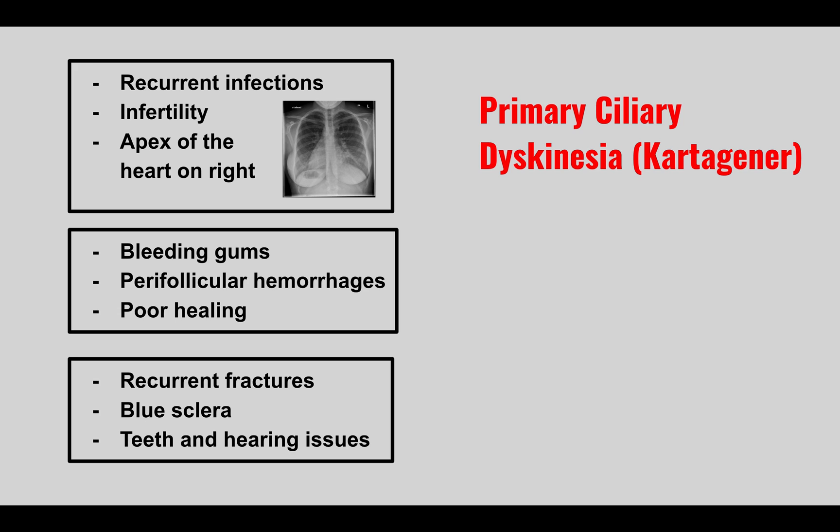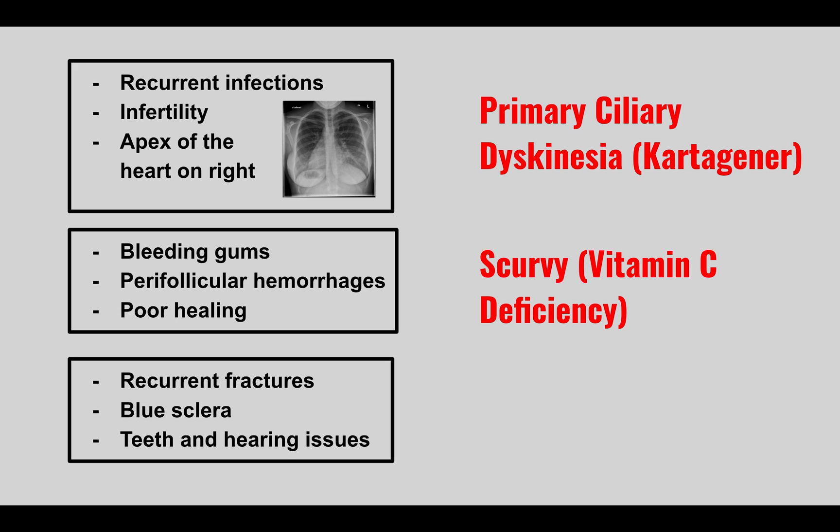The next condition: bleeding gums, perifollicular hemorrhages, and poor wound healing. This is scurvy — a vitamin C deficiency.